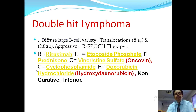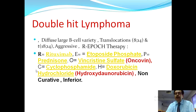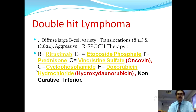Double-hit lymphoma is a diffuse large B-cell variety involving two gene translocations — between chromosomes 8 and 14, and 18 and 14 — and is very aggressive. The therapy offered is DA-EPOCH-R: rituximab, etoposide, prednisolone, vincristine, cyclophosphamide, and doxorubicin (hydroxydaunorubicin), though this is non-curative and considered inferior therapy.